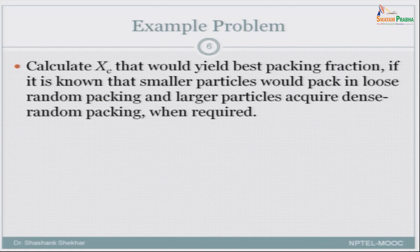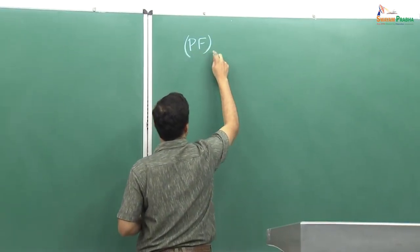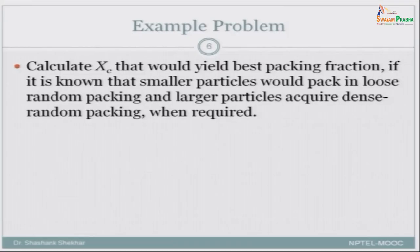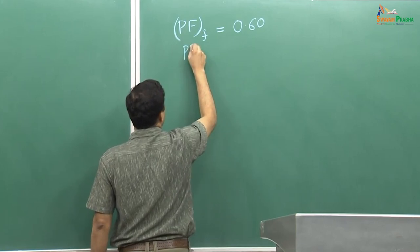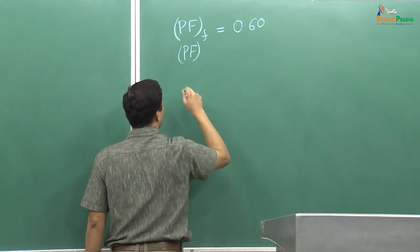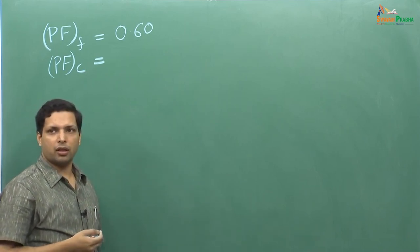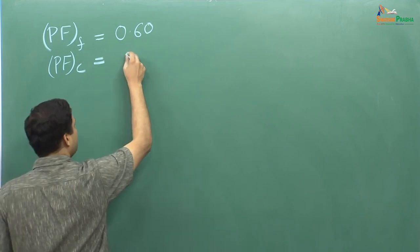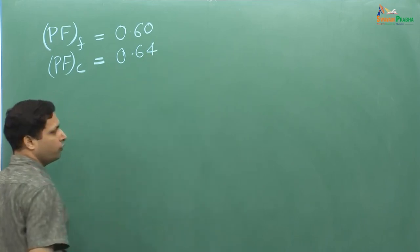Now you know what packing fractions were given for loose random packing and dense random packing. Let us put those numbers here. Packing fraction for loose random packing — which in this case is for the smaller particles — was 0.60. Packing fraction for coarse particles under dense random packing is 0.64. So these are the 2 values we know.